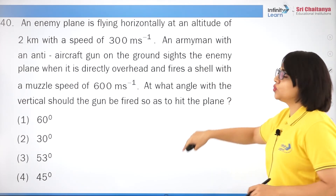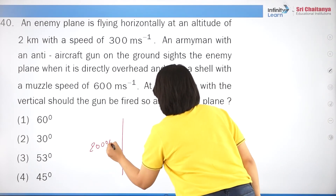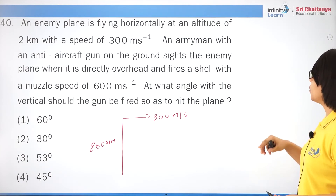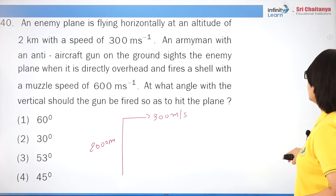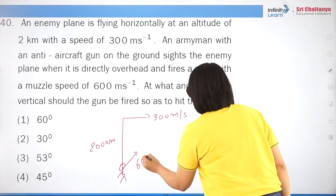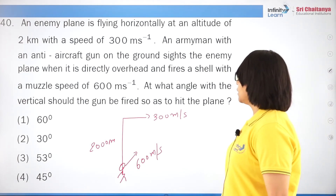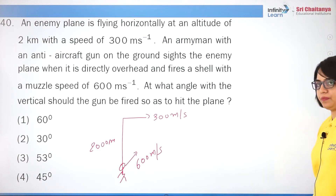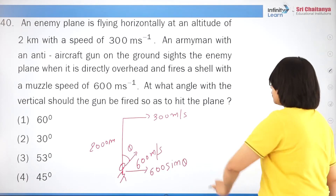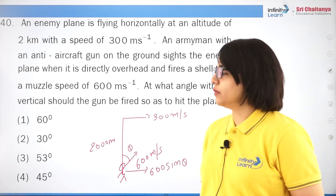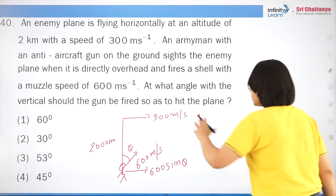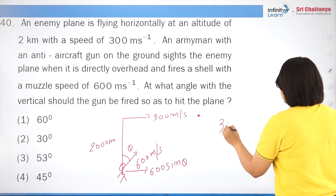Question 7: for a projectile, the ratio of maximum height to the square of time of flight. Maximum height H = U²sin²θ/2g and T² = 4U²sin²θ/g². Taking the ratio H/T², the U²sin²θ terms cancel, giving g/8. Taking g = 10, this is 10/8 = 5/4, which is option 1.